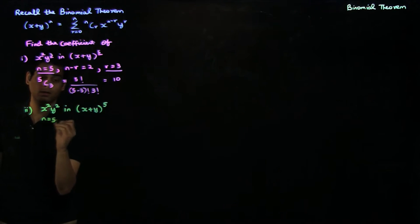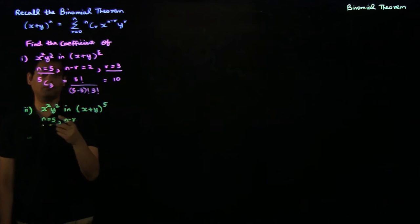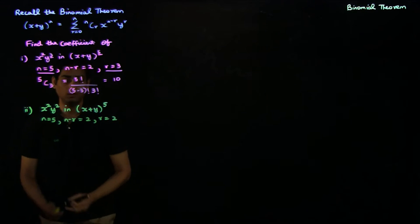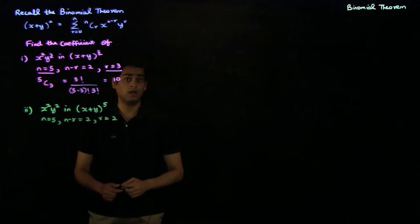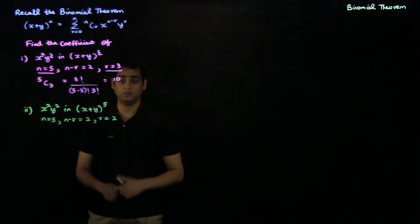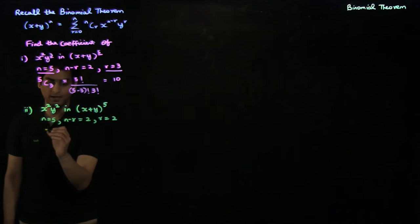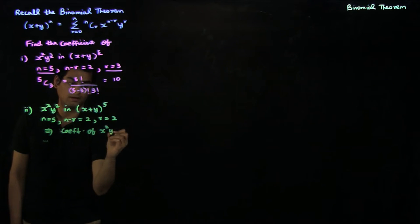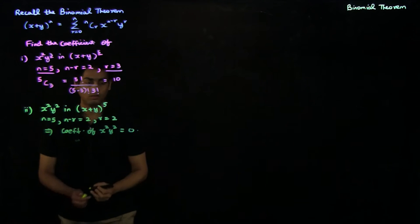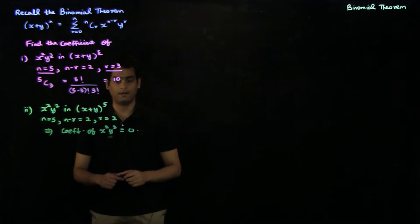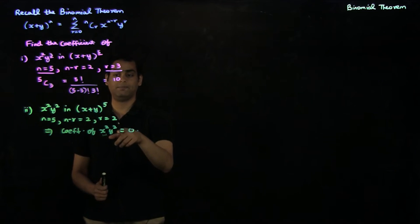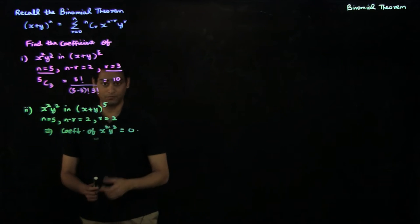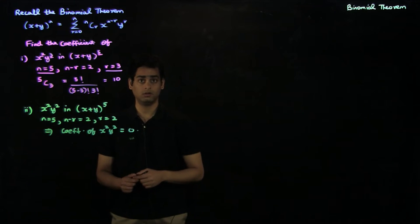Again, we have n = 5. We want n − r, the power of x, to be 2, and we want r, the power of y, to be 2. This system of linear equations is inconsistent — there is no solution — so the coefficient of x²y² is 0. In general, the power of x plus the power of y must add up to n = 5, and since 2 + 2 = 4 ≠ 5, we expect the coefficient to be 0.